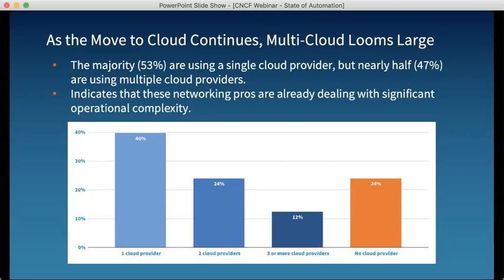Our takeaway is that networking pros are already dealing with significant operational complexity. It's hard enough to move from a physical to a virtualized environment; it's even harder to move networking into a cloud provider's environment, and even more complicated to work with multiple cloud environments. In response to a question from Josh about cloud adoption stats by industry, we'll put a link in the Q&A to download the report, which covers cloud adoption, single and multi-cloud by industry.